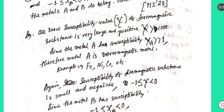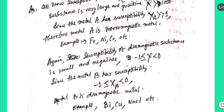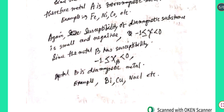The susceptibility of a diamagnetic substance is small and negative. Here χB is greater than or equal to minus 1 and less than 0. Since metal B has susceptibility χB in this range, metal B is a diamagnetic material. Examples include bismuth, copper, NaCl, etc.